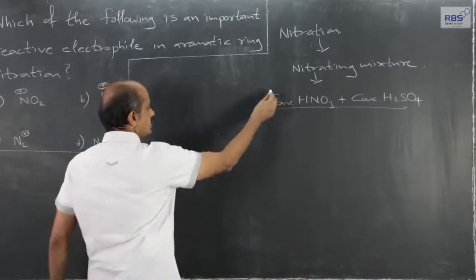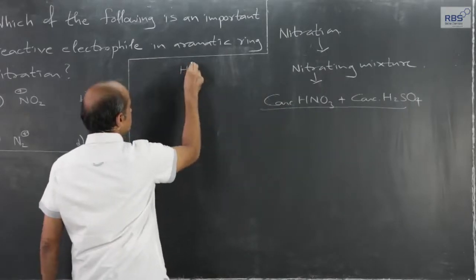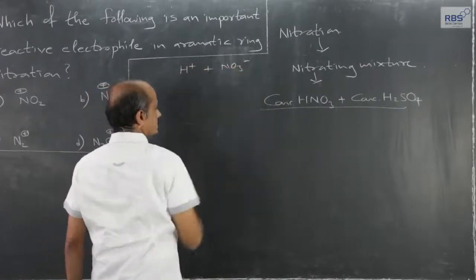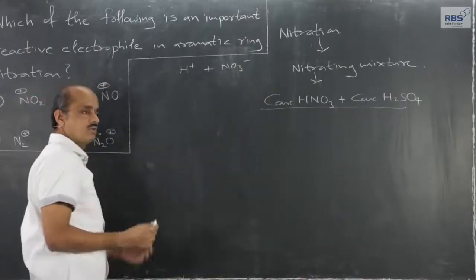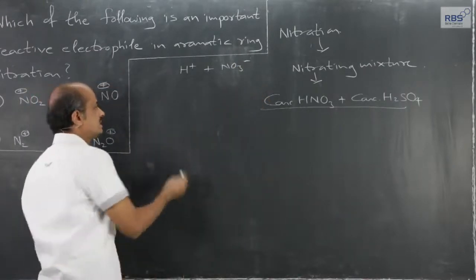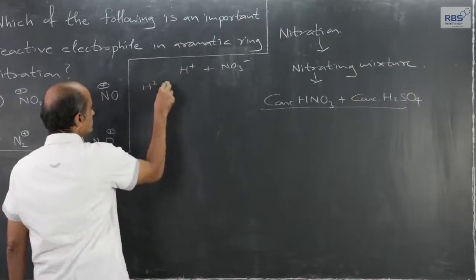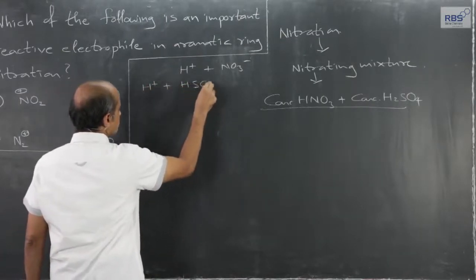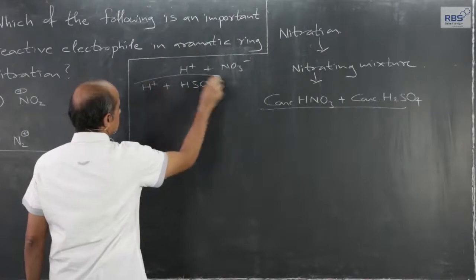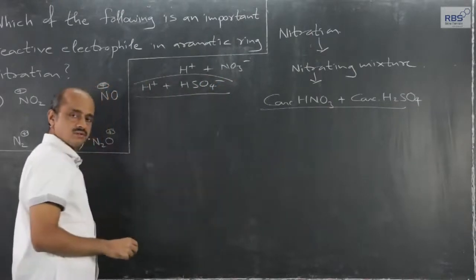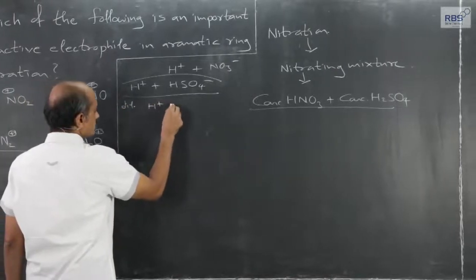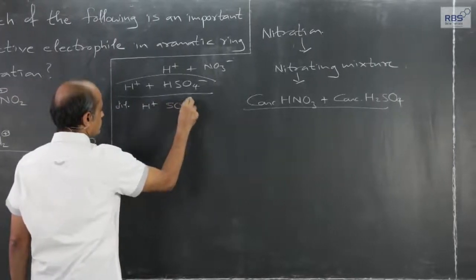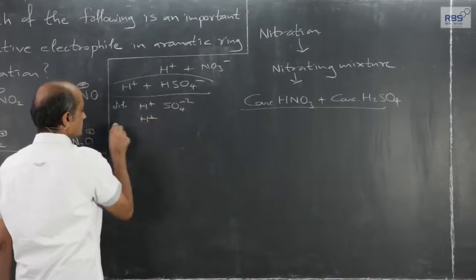If it were dilute, then nitric acid will give H+ and NO3- ions. If H2SO4 is moderately concentrated, it would give H+ and HSO4- ions. If H2SO4 were dilute, it would give H+, SO4²-, and H+ ions.